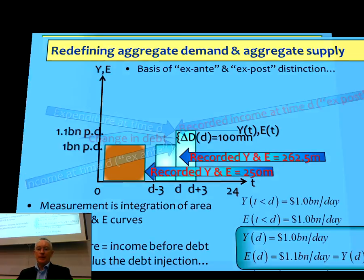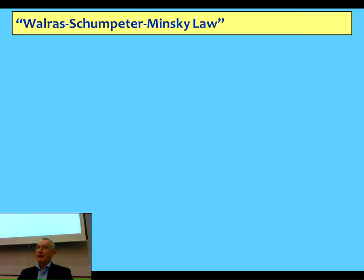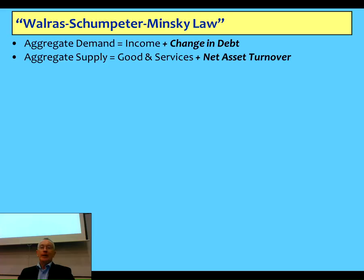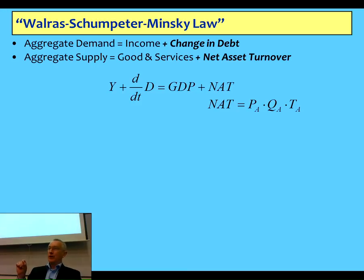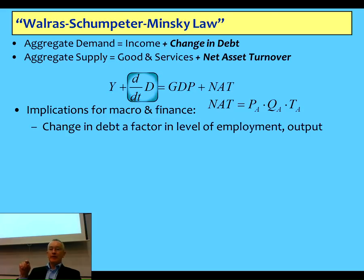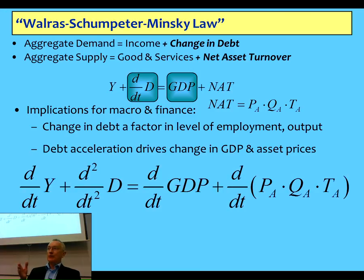There's more work to be done, but the overall principle is that aggregate demand in an economy is income plus the change in debt from the ex-ante point of view. Aggregate supply isn't just goods and services — it's also what's happening in finance markets. I call this net asset turnover: there's a price level for assets, a quantity of assets, and a fraction of them that turn over on an annual basis. There will be a relationship between change in debt and the level of economic output, GDP, employment, and so on.